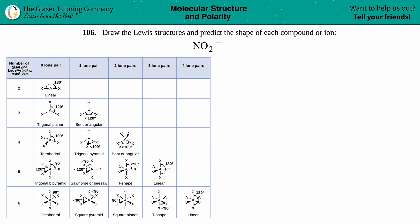Number 106. Draw the Lewis structures and predict the shape of each compound or ion, and then we have NO2 minus. Now this is an ion because we do have a charge. If they just write a negative, this means that the overall molecule has a negative 1 charge, which basically means that you have gained one extra electron. That's making you negative, because electrons are negative.